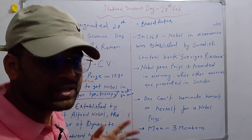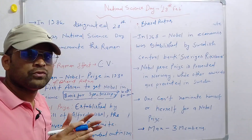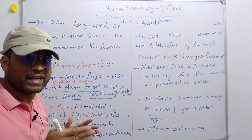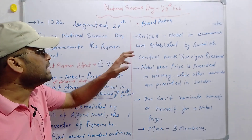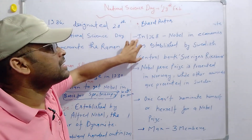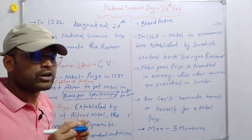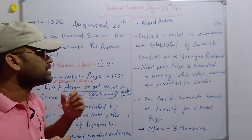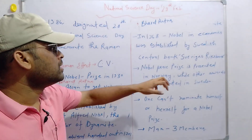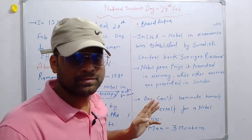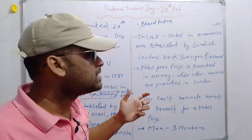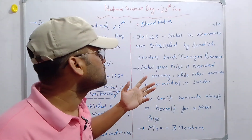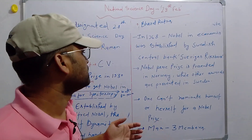Initially, the Nobel Prize was given in five categories. But in 1968, the Nobel Prize in economics was established by the Swedish central bank, and since then, the Nobel Prize in economics is given every year.